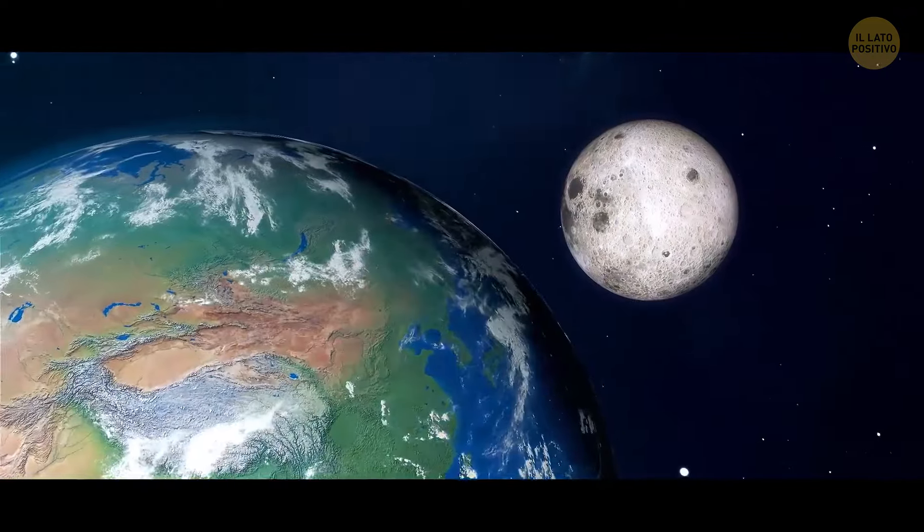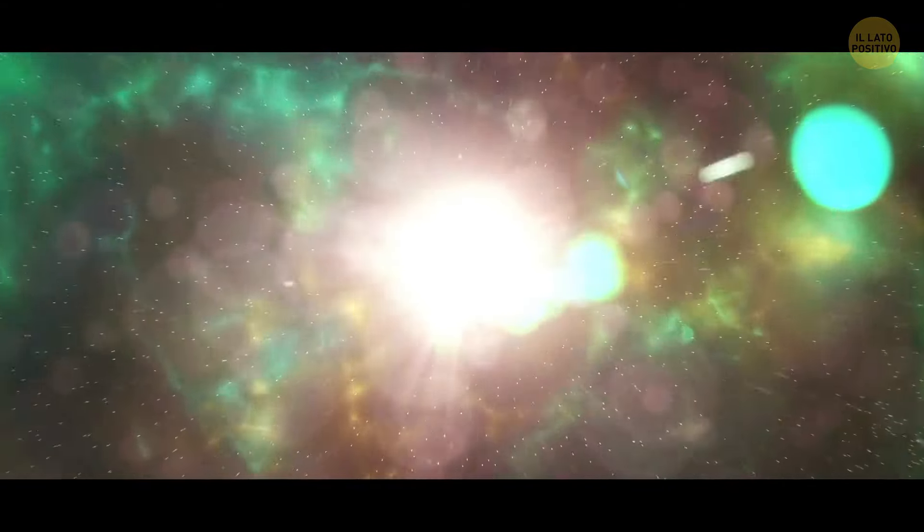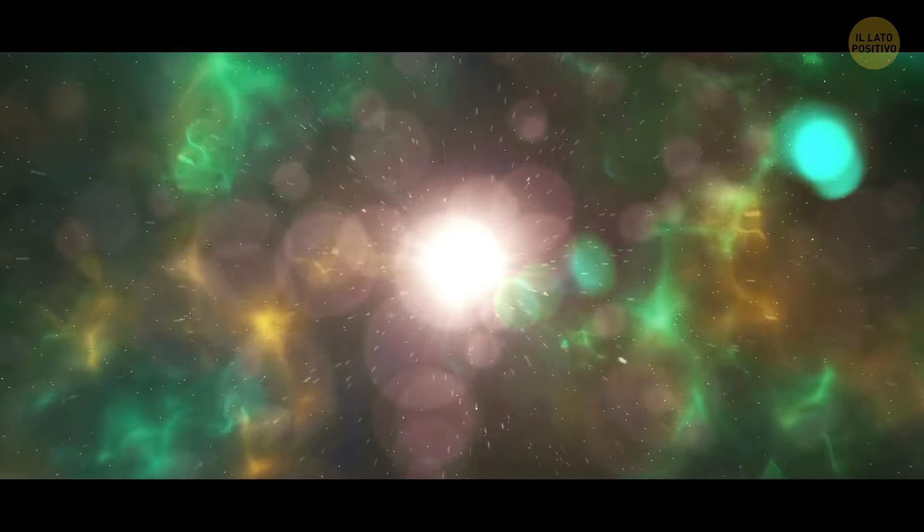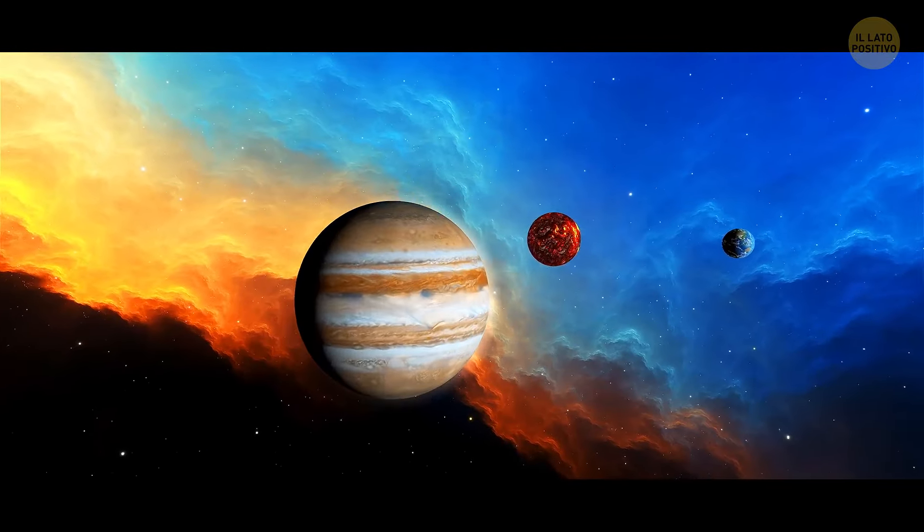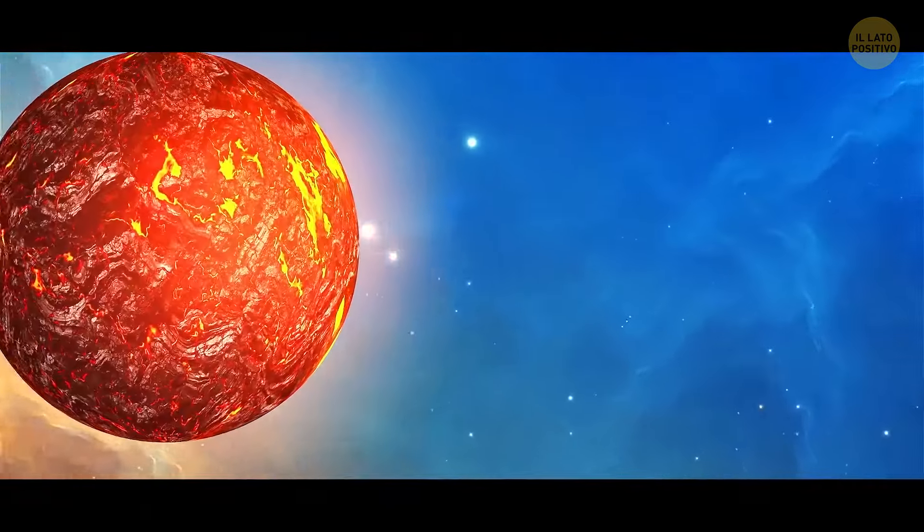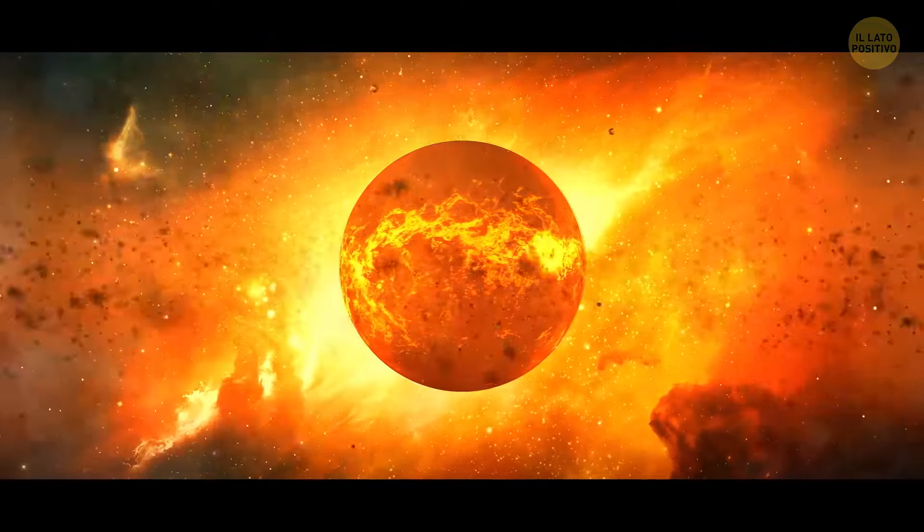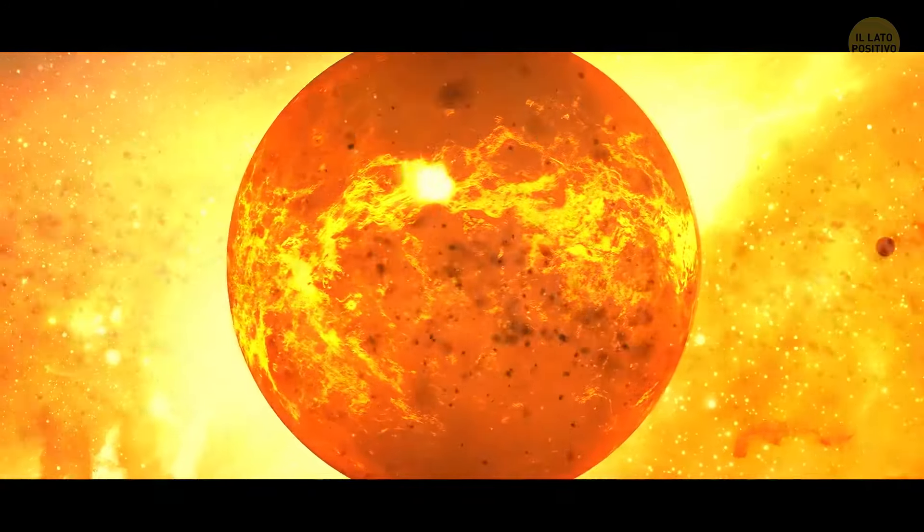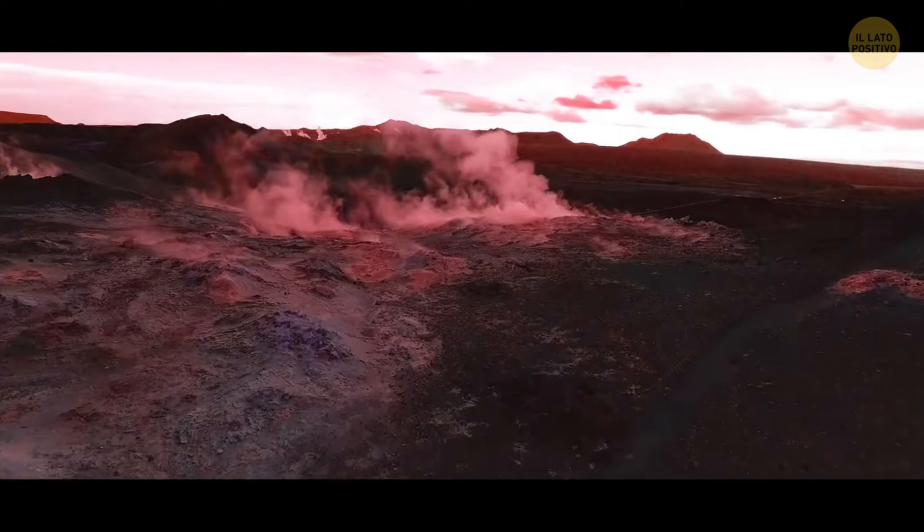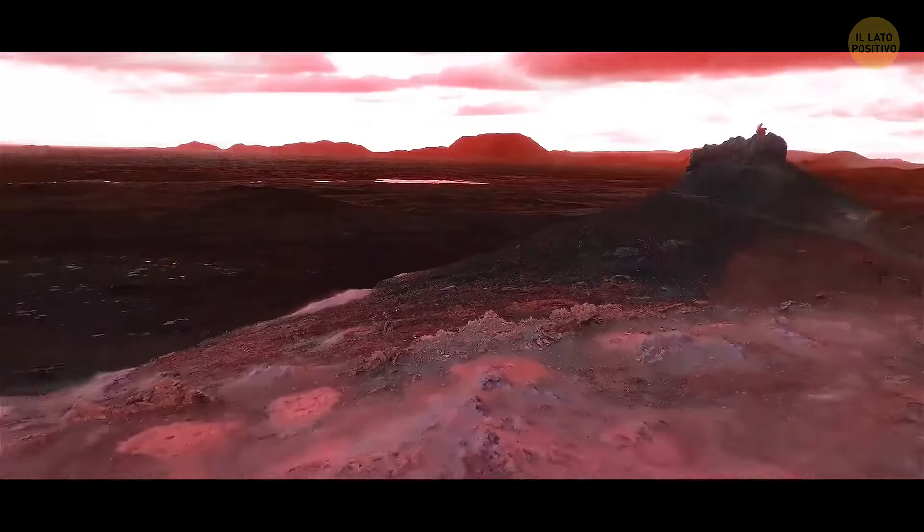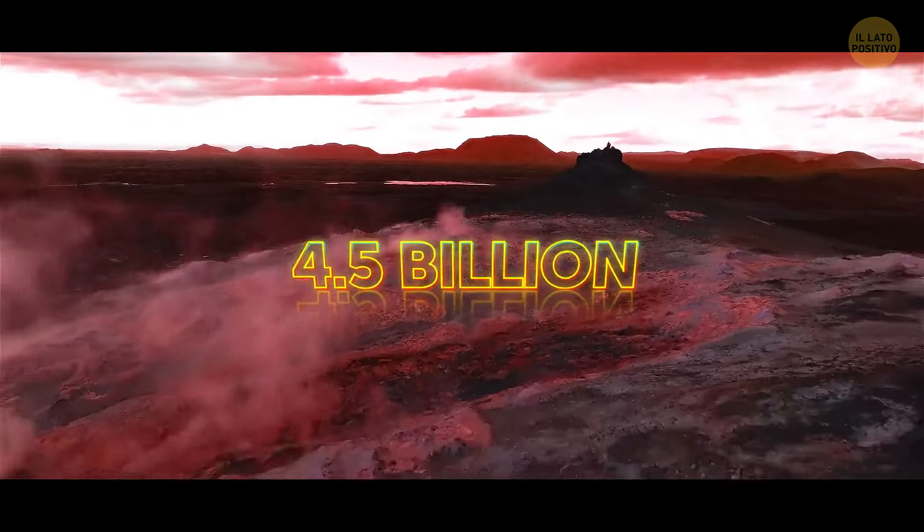At the time of the impact, the solar system was just forming. And this rendezvous of epic proportions probably wouldn't have happened if it weren't for a newly formed Jupiter throwing Theia off its orbit and straight into Earth. Our young planet withstood the blow. Time passed. Earth evolved. Its surface would become unrecognizable over the next 4.5 billion years.